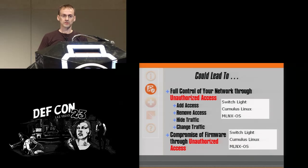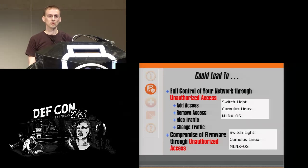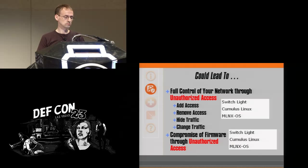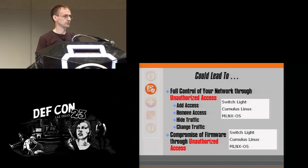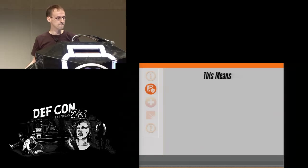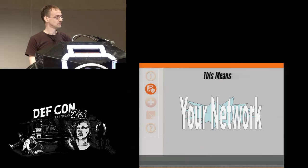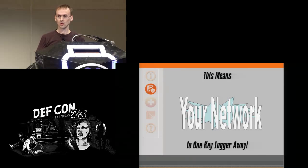That one password — get that out of the way, and compromising a workstation is trivial; keylogging is trivial. This leads to full control of your network: first the switch, then the network, through unauthorized access — add access, remove access, hide traffic, change traffic. All three operating systems. And then, of course, compromise of the firmware through unauthorized root access, because root gets you access to the flash, gets you access to ONIE. You can modify it, and you have your firmware compromised. Your network is one keylog away.